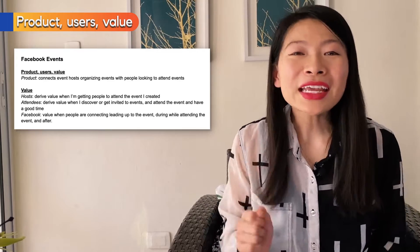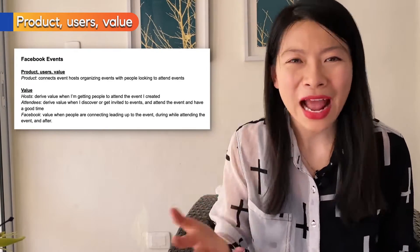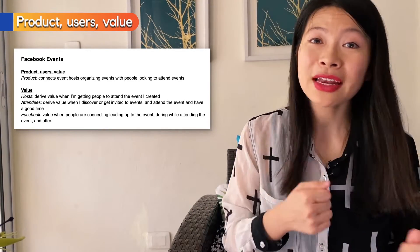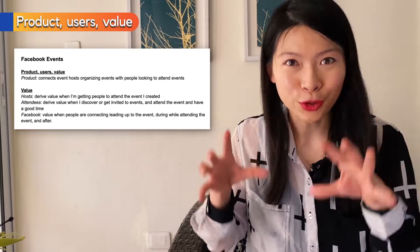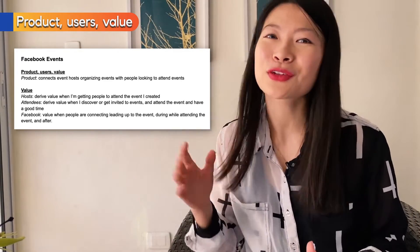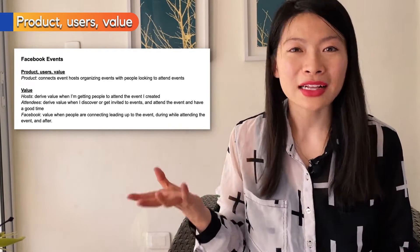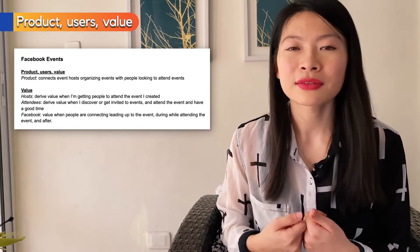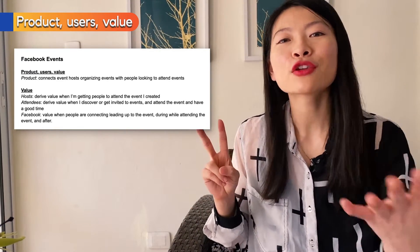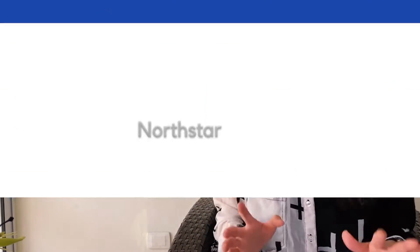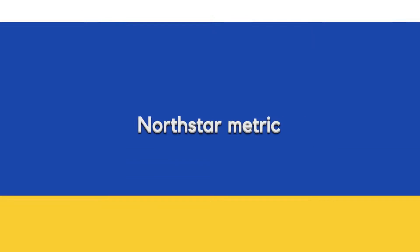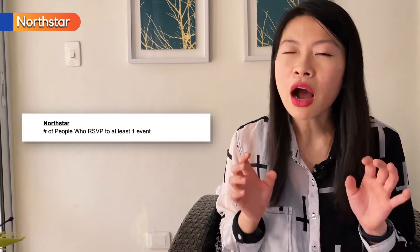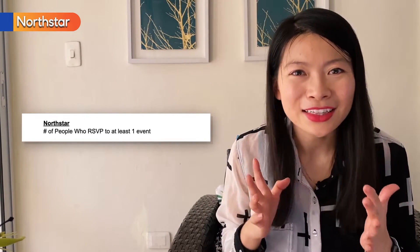Now let's talk about the values for each of the users. On one side are the hosts, who get value when people actually attend their events. On the other side are attendees, who find value when they discover or get invited to events and when they attend. And for Facebook, they get value when people are interacting before, during, and after the event — when people are connecting to become friends. In our second step, we're looking for the North Star — a good North Star is at the intersection of value between these various parties. The common denominator here seems to be when people are attending the actual event.